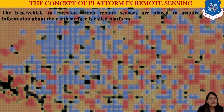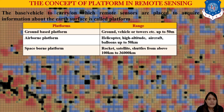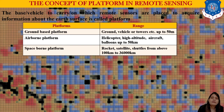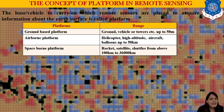Various platforms carry the sensors — when sensors are placed on a vehicle, it is known as a platform. The first type is the ground-based platform: ground vehicle or tower up to a certain height. When we take an image mounted from the ground, that is ground-based. The next is the aerial platform — helicopters, high altitude, low altitude, balloons up to 50 kilometers — known as the airborne platform.